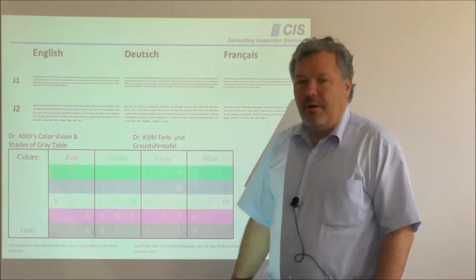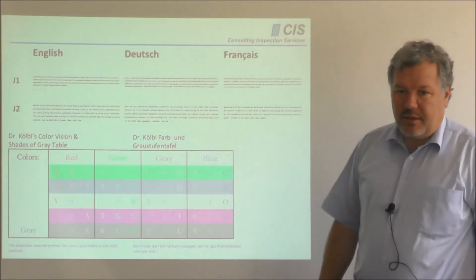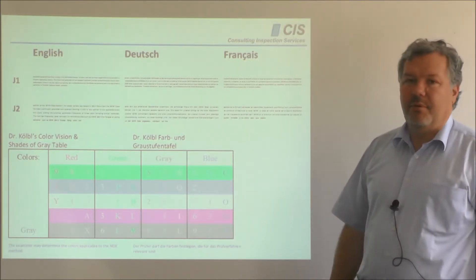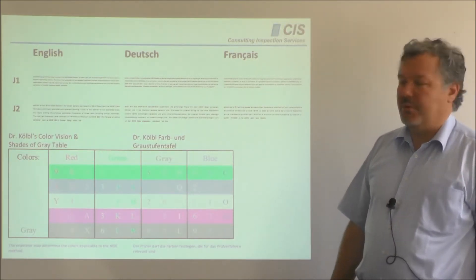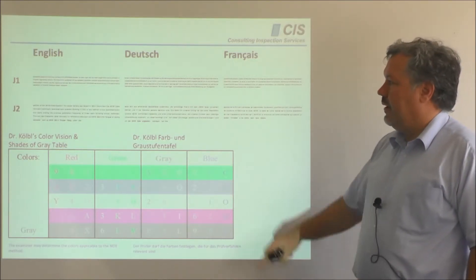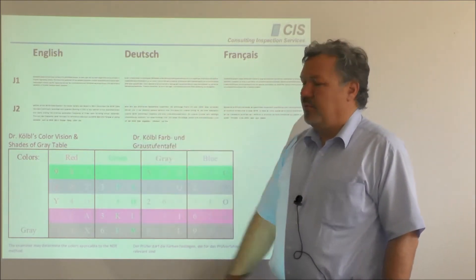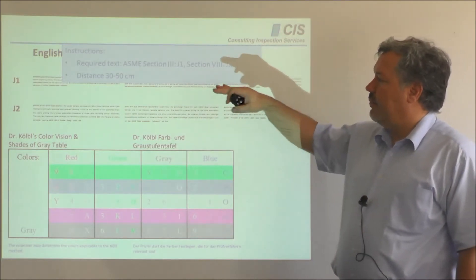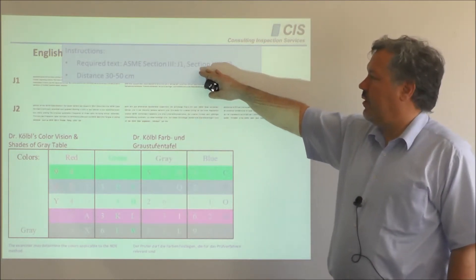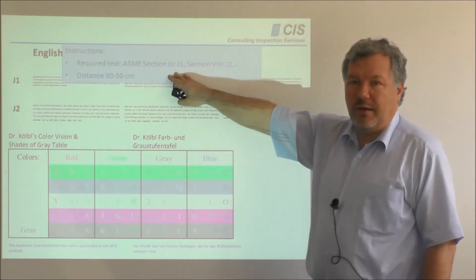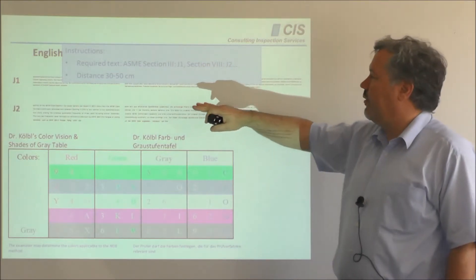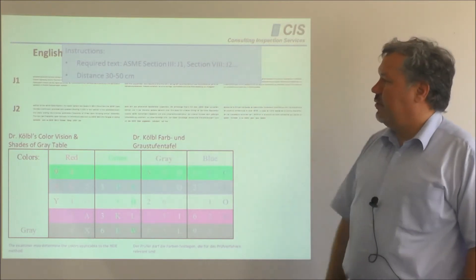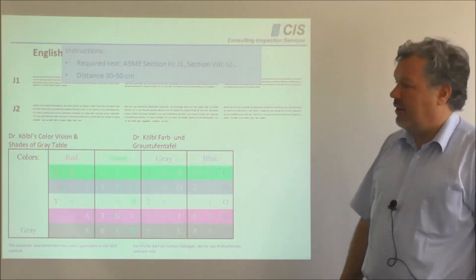Make sure that these examination results are not considered as medical examination results — it is simply a physical property which has been documented. We have the Jäger 1 and Jäger 2 charts in three different languages. It is important that you first choose the required chart: Jäger 1, as required for ASME Section 3, or Jäger 2, as required for ASME Section 8.